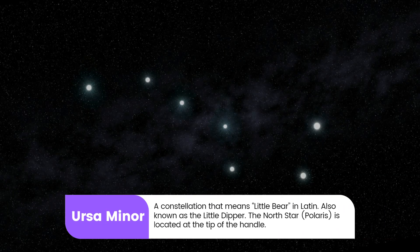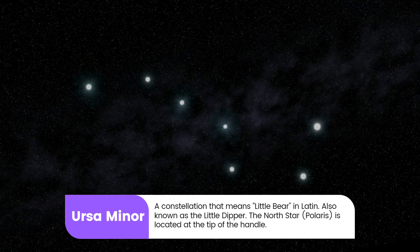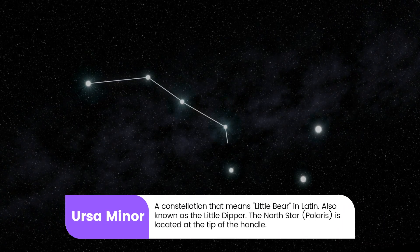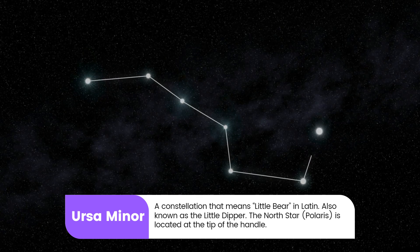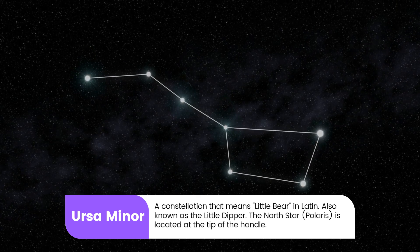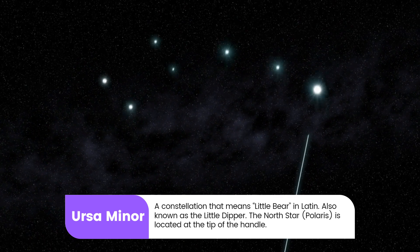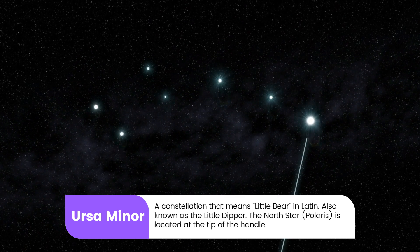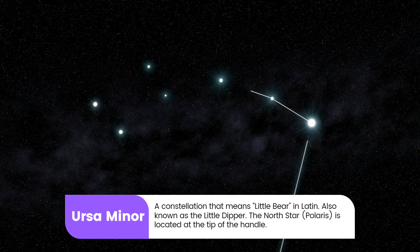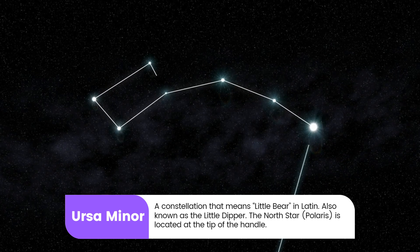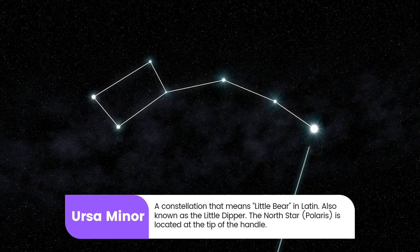12. Ursa Minor: A constellation that means Little Bear in Latin, also known as the Little Dipper. The North Star, Polaris, is located at the tip of the handle.